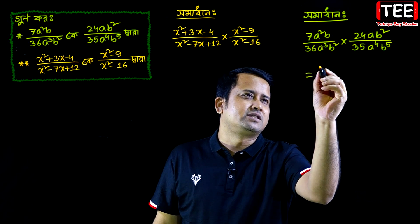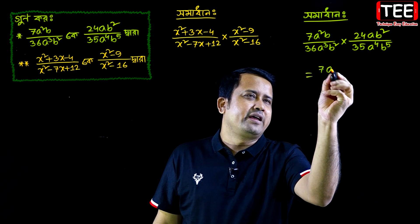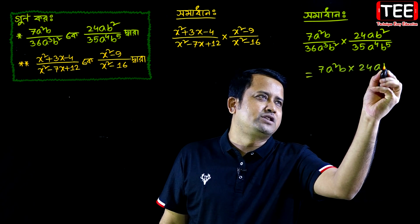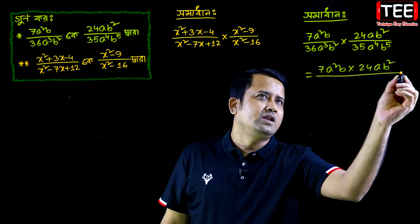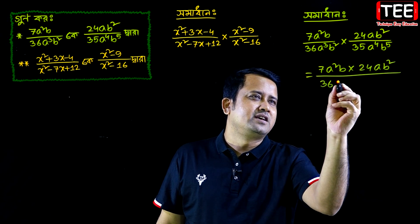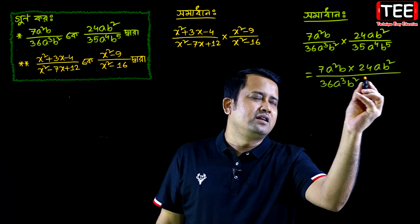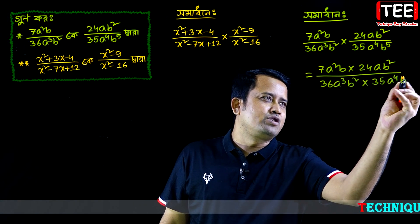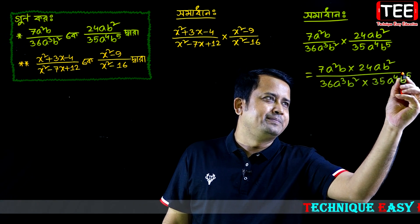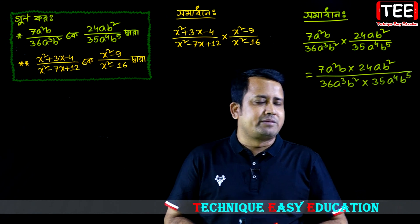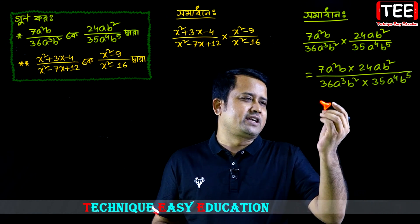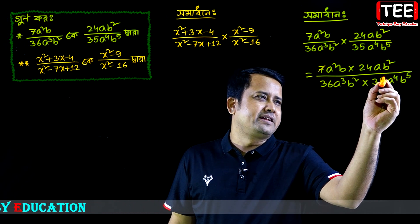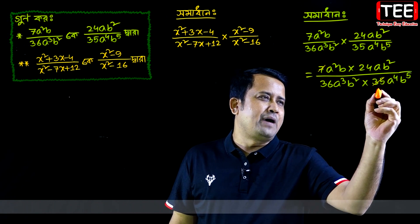If I take this one: 7 a squared, 24 b squared, 36 a cubed, squared into 35, a to the power 4, b to the power 5.